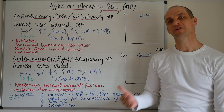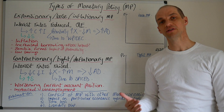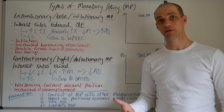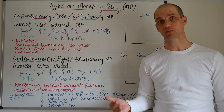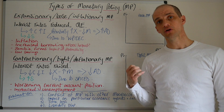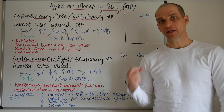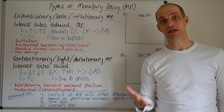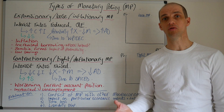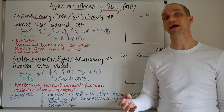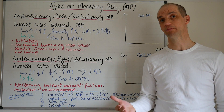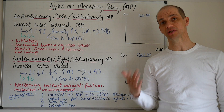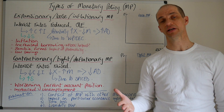Hi everyone. In this lesson we're going to focus on the different types of monetary policy that can be used by the central bank of an economy. It's important to give some context here and be aware that within the UK economy we have had a very, very loose form of monetary policy since the financial crisis in 2008.